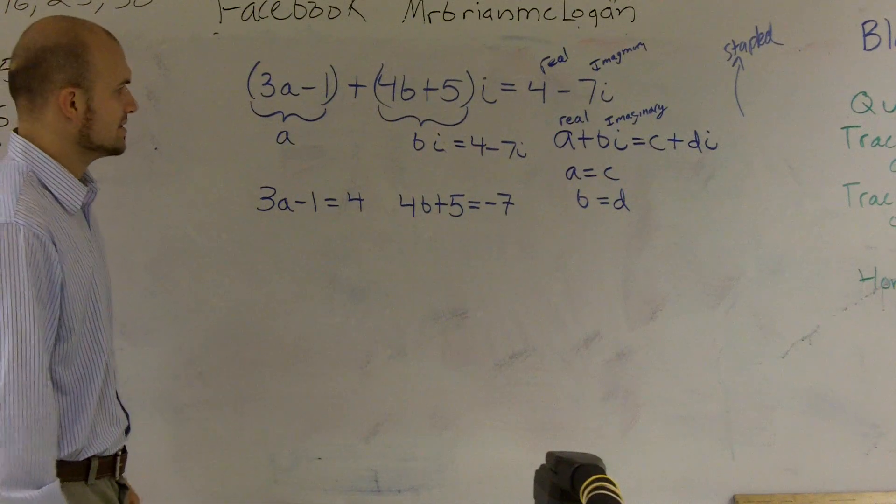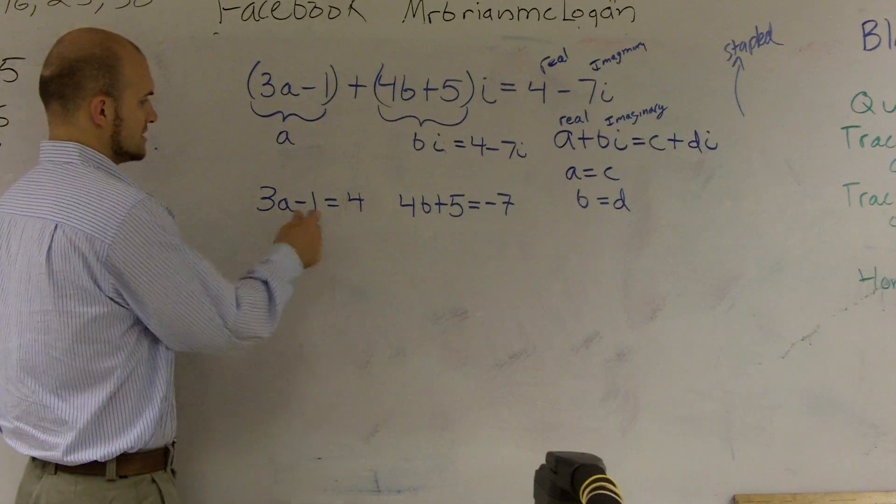So now here we just have two linear equations that we have to solve for. So I just say plus 1, 3a equals 5, a equals 5 thirds.